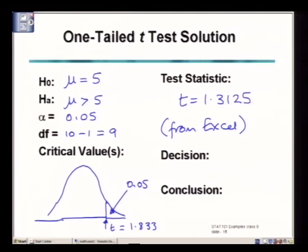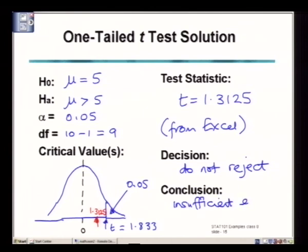This means our test statistic, remember this t-distribution has zero in the middle here. The test statistic is somewhere between zero and the critical value, 1.3125, it's in the do not reject region. So we do not have evidence here to suggest that the mean sales is bigger than 5 and we can write that in the context of the problem. Insufficient evidence that the mean is greater than 5.